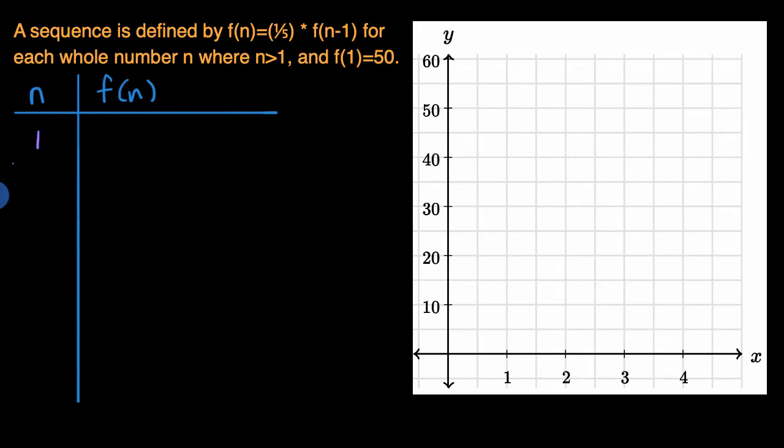Let's first start with n equals one. Well, they already tell us that f(1) is equal to 50. And if we want, we can plot that. When n is equal to one, and I should say this is the n-axis instead of the x-axis, f(1) is 50 right over here. So let's call this the y equals f(n) axis.